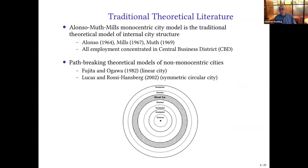In the monocentric city model, because commuting costs increase with distance away from the central business district, in equilibrium workers must be indifferent across locations, so the higher commuting costs further from the CBD have to be offset by lower land prices. The key prediction is a land rent gradient, with higher land rents in the center and lower land rents in the suburbs. An important contribution in the earlier theory literature was to move away from the monocentric city and develop so-called non-monocentric models, where one solves endogenously for the location of both employment and residents within the city.